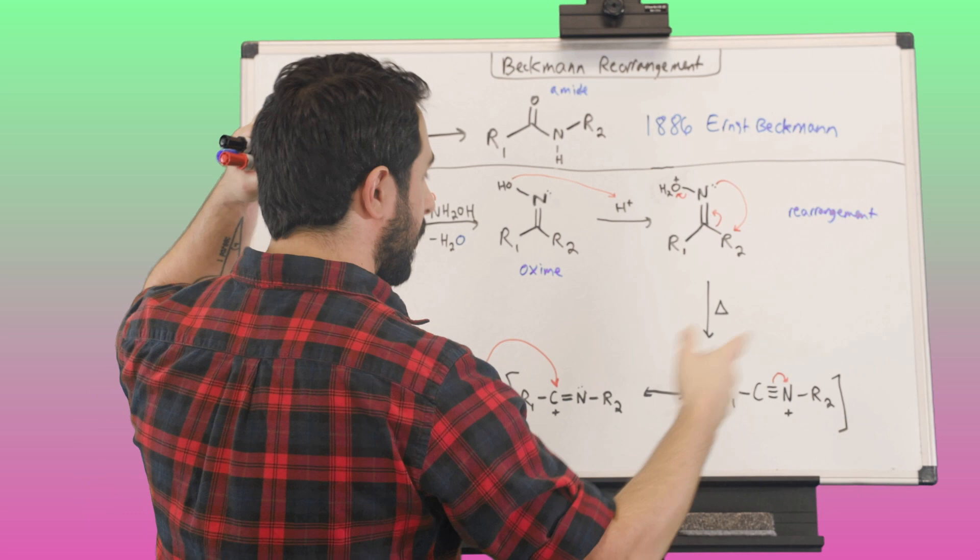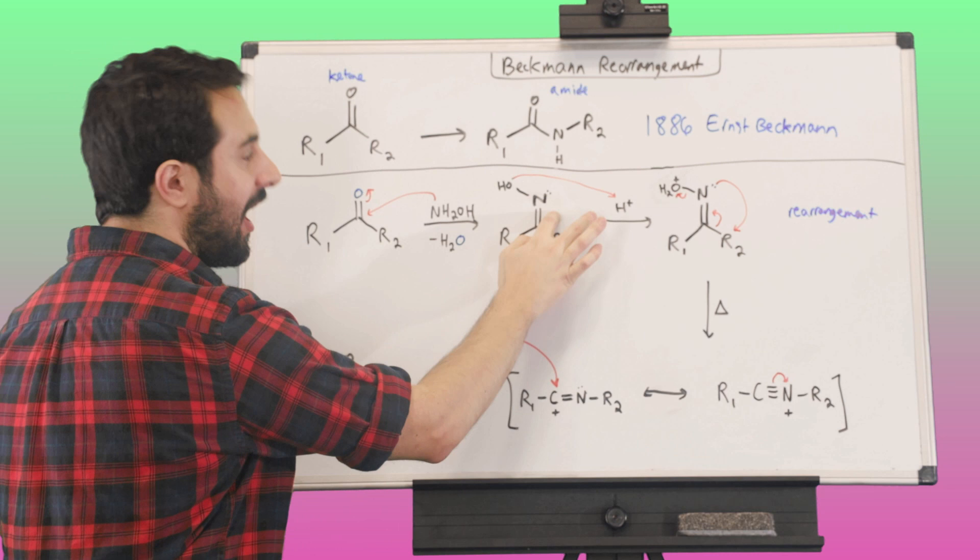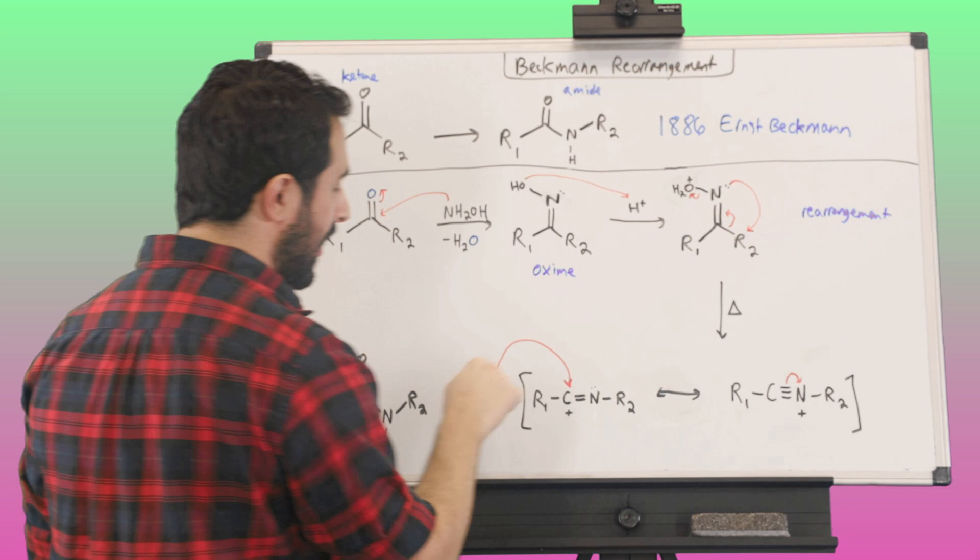But, this is the Beckman rearrangement, we've got a ketone, we're forming the oxime, and then this is the key rearrangement step, where things sort of swap order, and then water attacks, and we get our amide. So, that's the basic mechanism for the Beckman rearrangement.